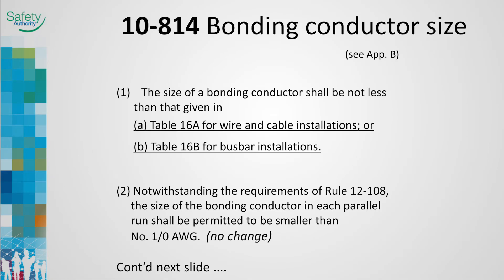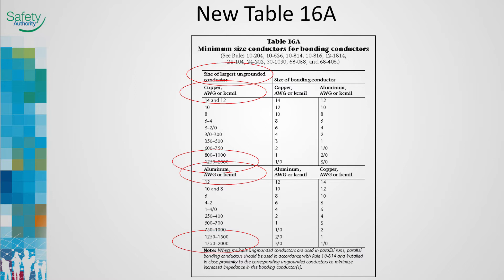Rule 10-814, bonding conductor size, sub-rule 3, provides direction for selecting bonding conductors when circuit conductors are paralleled. The sub-rule has been edited to separate the two types of installation methods. Bonding conductors selected using Table 16A are based on circuit conductor size, whereas bonding conductors selected using Table 16B are based on the ampacity of the bus bar installation. New Table 16A now specifies the size of the largest ungrounded conductor. The table has been separated to provide separate copper and aluminum wire references. The bonding conductor sizes have been slightly revised to correct for ampacity adjustments to some conductors. The size of the ungrounded conductor is now capped at 2000 kcm.